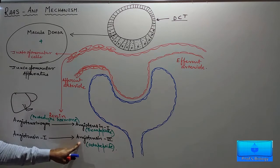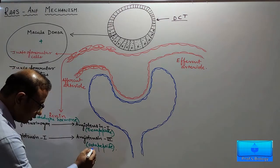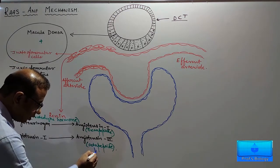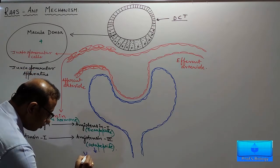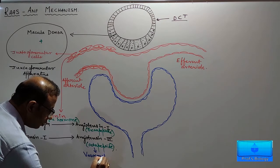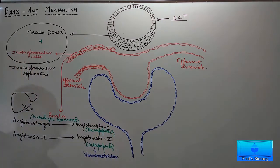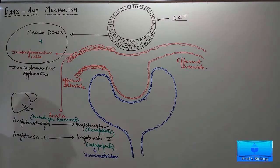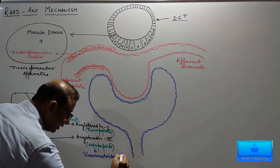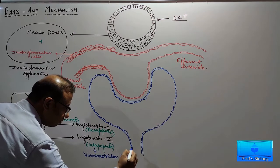Once we have angiotensin 2, it is a powerful vasoconstrictor which brings about contraction of smooth muscles of blood vessels and increases blood pressure.